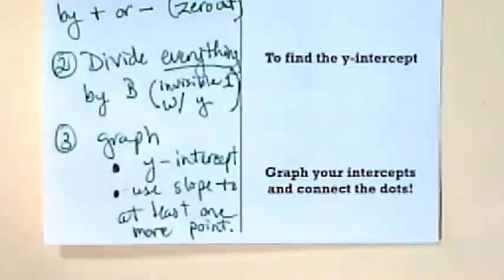And those are our three steps. We've done these things over and over in solving equations before. We've zeroed out terms, we've divided to get invisible ones, we've solved for a variable. What we're saying here is we're going to be solving for y.